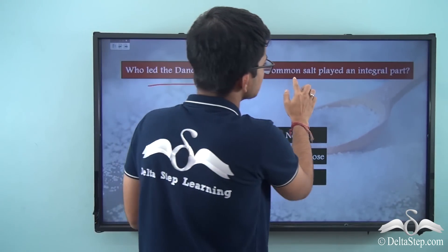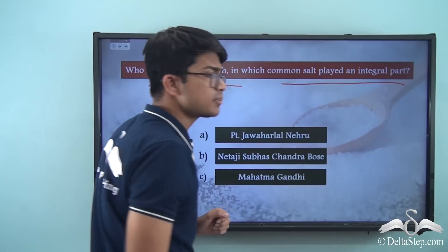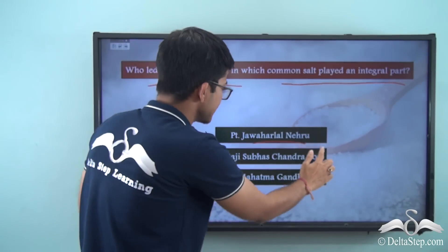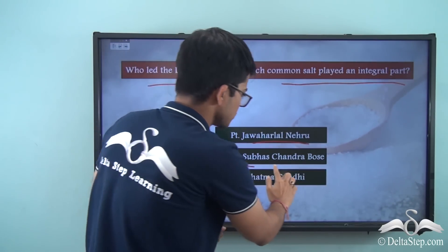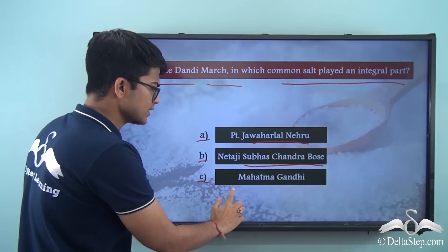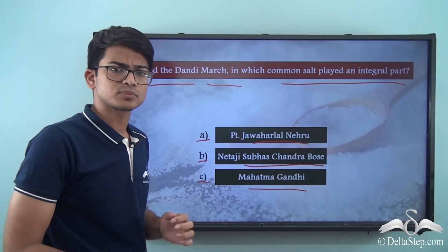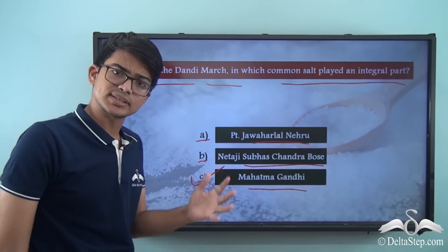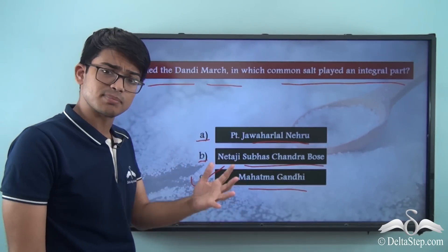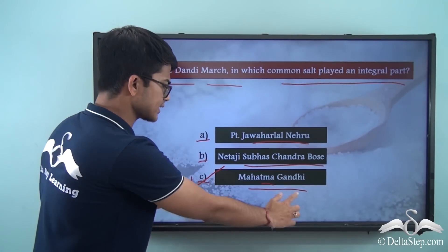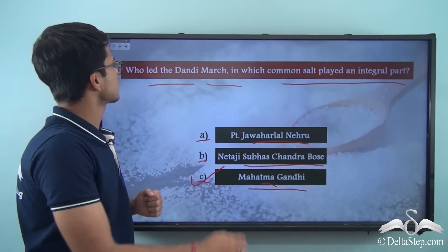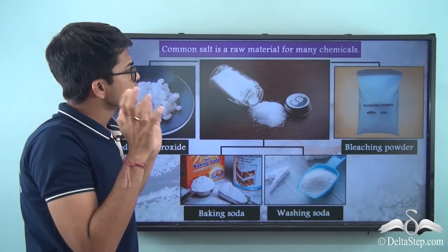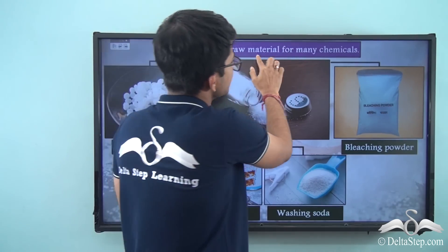Question: who led the Dandi March in which common salt played an integral part? Option A: Pandit Jawaharlal Nehru. Option B: Netaji Subhas Chandra Bose. Option C: Mahatma Gandhi. The correct answer is option C - the Salt Satyagraha or Dandi March was led by Mahatma Gandhi.